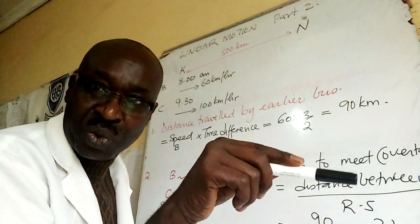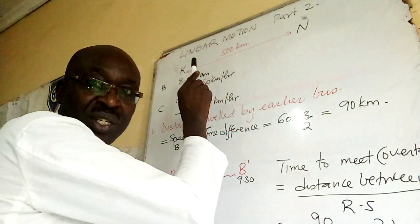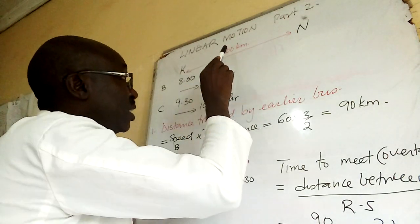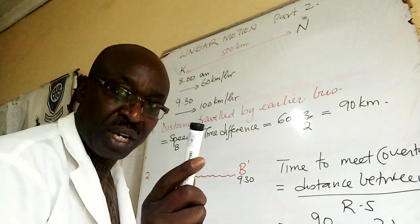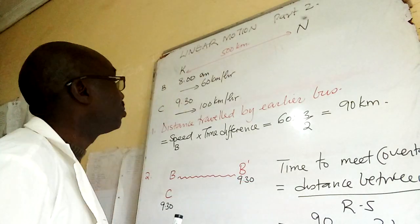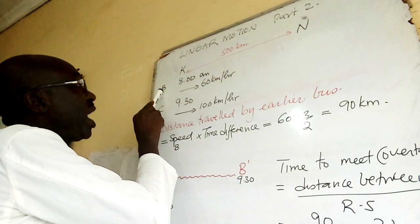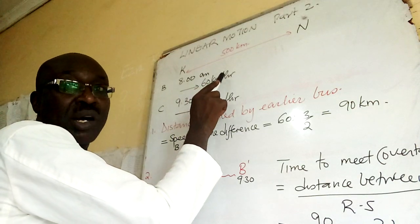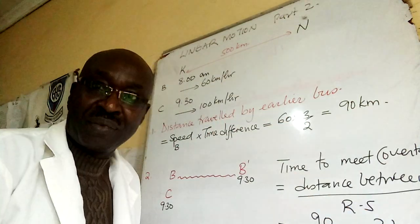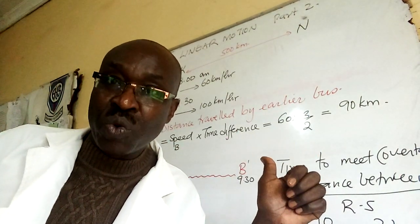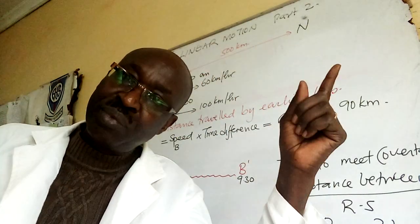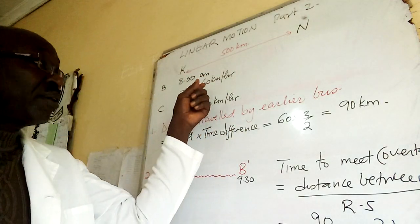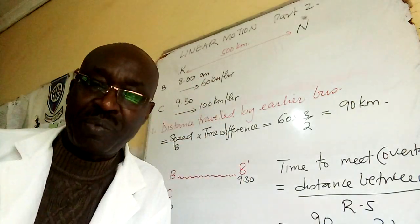K, so it fits all of you. But for me, this is Kisumu and Nairobi. The distance between them is 500 kilometers. A bus leaves Kisumu at 8 AM, moving at a speed of 60 kilometers per hour towards Nairobi. Kisumu is 500 kilometers away from Nairobi. That bus is moving at 60 kilometers per hour and it left Kisumu at 8 AM.